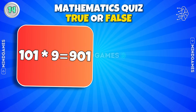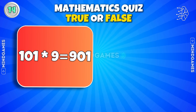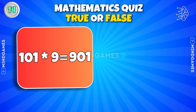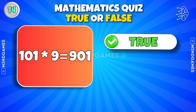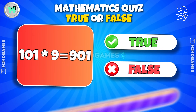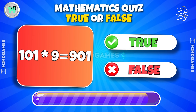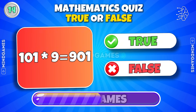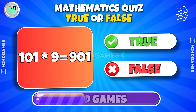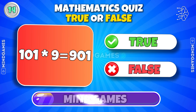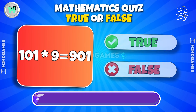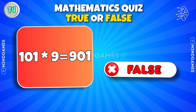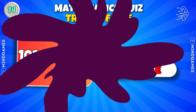101 into 9 is equal to 901. True or false? It's false — correct answer is 909.